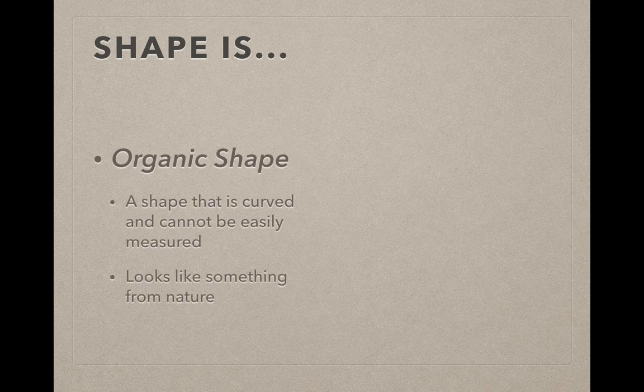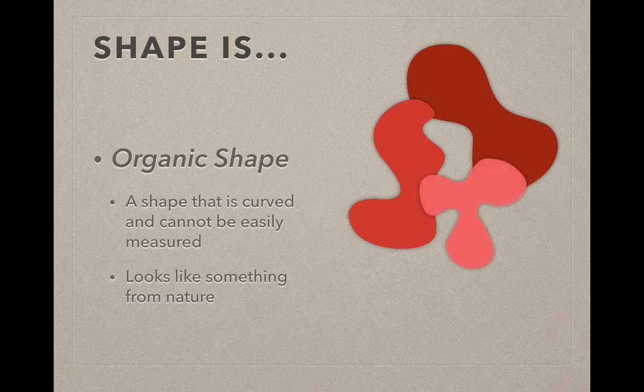Organic shapes are shapes that are curved and can't easily be measured. They look like something from nature. An easy way to describe them would be blobby or curvy.